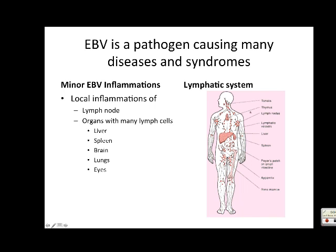You'll notice some things are not included - the thymus is not included, and there's no discussion of intestinal lymph nodes in most literature. When you look at a list like this, you look at what is not included - sometimes that's easier to remember.